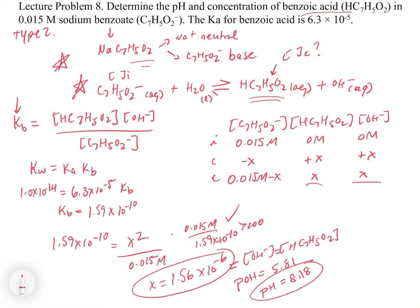That's how you solve this problem. But the most important thing is to work out what you've got in solution. Think about whether it's going to act as an acid or base. Once you have that, you write your equation, your Ka or Kb expression, and then work through the ICE table.